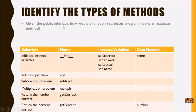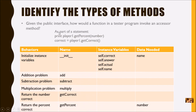Given this public interface, how would a function invoke an accessor method? An accessor returns a value, so it has to be part of a statement. It could be part of a print statement, an assignment statement, or a condition — there are lots of different ways, but it has to be part of something. It cannot stand by itself.